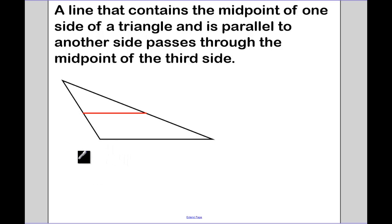A line that connects the midpoint of one side of a triangle. So let's have a triangle here. And again, this is another theorem. So ABC. It contains the midpoint of one side of a triangle. XY. So if X is the midpoint of AC and is parallel, so and XY is parallel to CB.